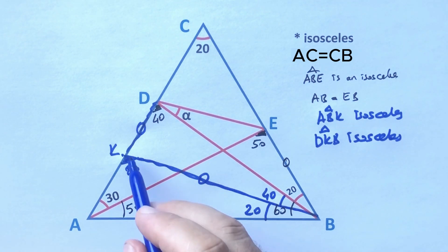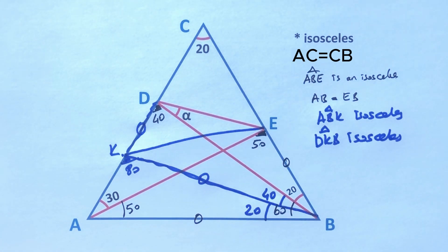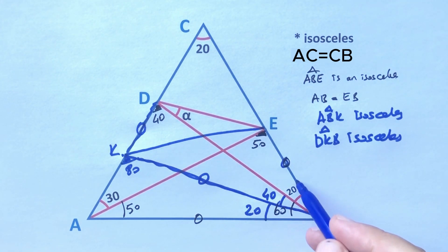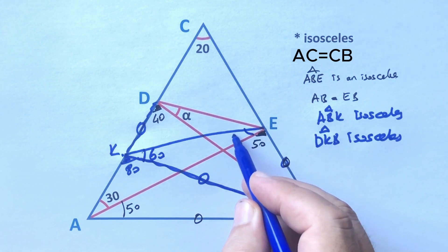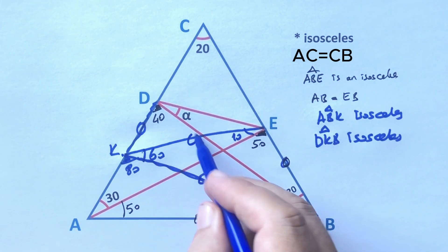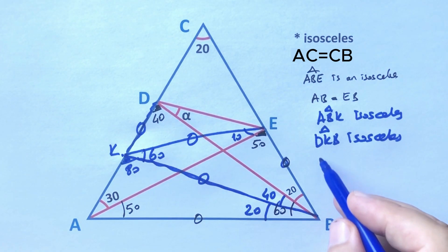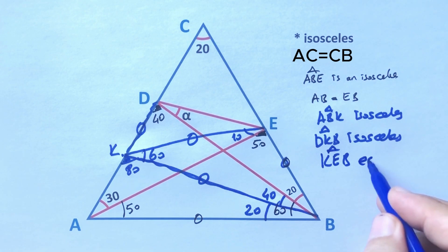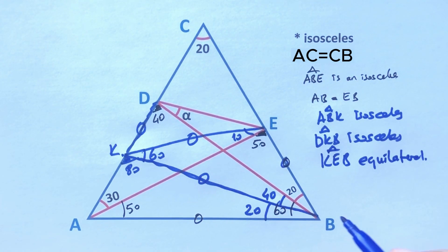If we connect points K and E, notice that here is 60 degrees and these two sides are equal, so that means we get an equilateral triangle. These sides must all be equal. Triangle KEB is an equilateral triangle.